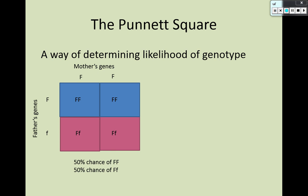This also doesn't mean that if the couple has two children, one would be homozygous dominant and one would be heterozygous. They could both be homozygous dominant, because every time this couple has a child it's a 50-50 chance of each genotype. If you're a math person, you can figure out that if there are two children, there's a 25% chance of them both being homozygous dominant or both being heterozygous.